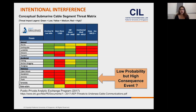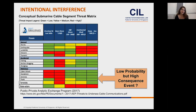We classify intentional interference as a low-probability but high-consequence event, and therefore quite important to protect against. While operating in the ocean environment is difficult, it would be possible — for example, you could drop an anchor, send scuba divers, or use undersea vehicles to actually damage cables.